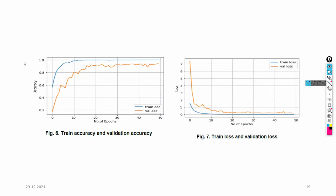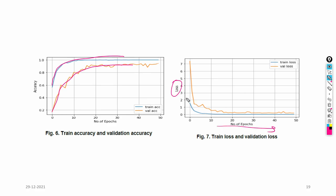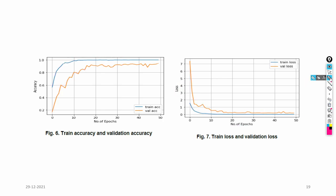Looking at the learning curves: the train score increases and the validation score also increases. As epochs increase, loss decreases. Training loss is always less compared to validation loss, and validation loss also moves down towards zero. The model is a generalized model — it is neither overfitted nor underfitted.